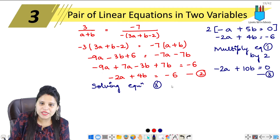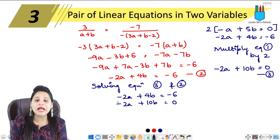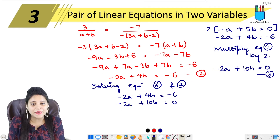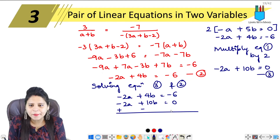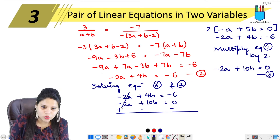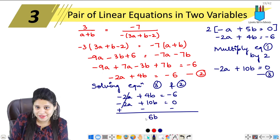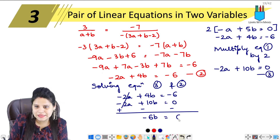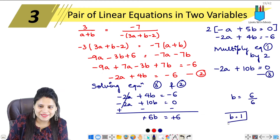Solving equation 3 and equation 2: minus 2A plus 10B equals 0, minus 2A plus 4B equals minus 6. Subtracting, the A terms cancel, leaving 6B equals 6, so B equals 1.